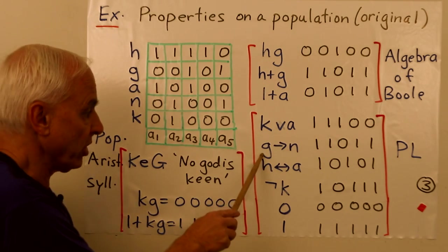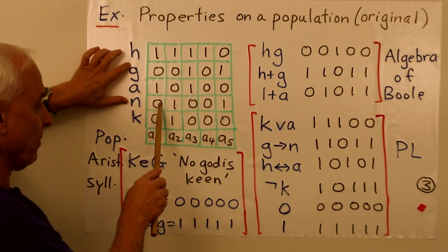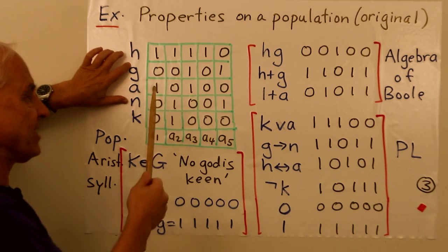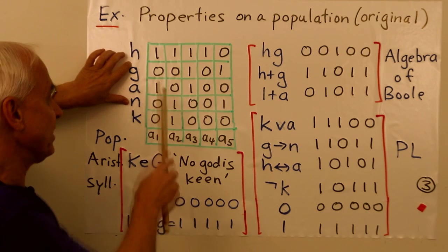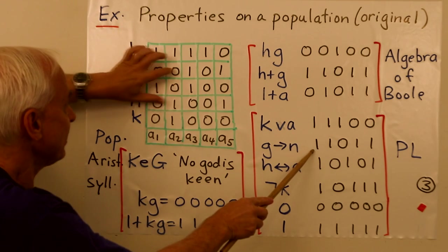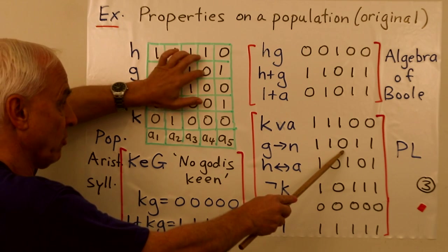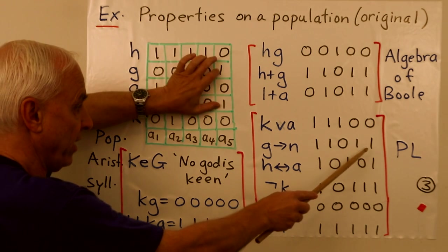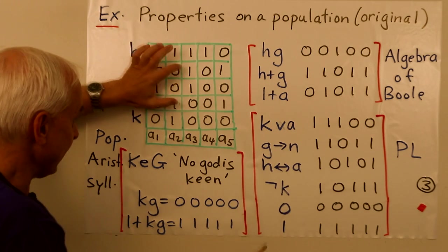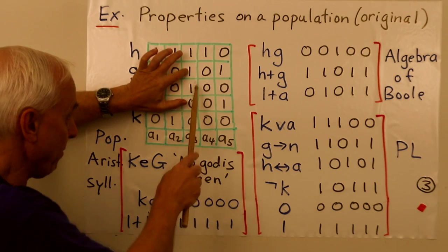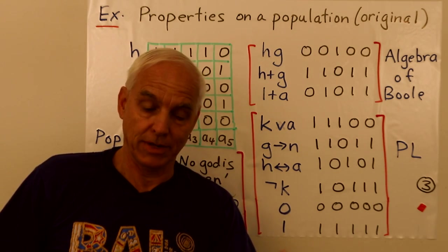We have the implication. G implies N. Here's G, here's N. Does 0 imply 0? Well, that's maybe not the right way of saying it. We should say, what is 0 implies 0? By definition, 0 implies 0 is 1. 0 implies 1 is 1. 1 implies 0 is 0. 0 implies 0 is 1. 1 implies 1 is 1. So the only time an implication is 0 is in something like this, when you have 1 implies 0. 1 implies 0 equals 0. Otherwise, it equals 1.